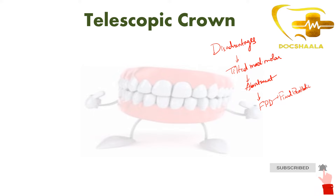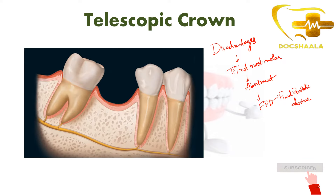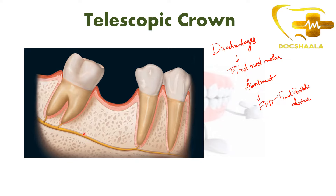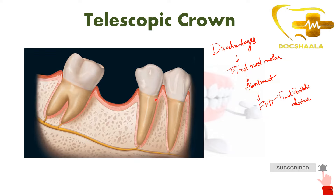So why is it a disadvantage to have a tilted mandibular molar while fabricating a fixed prosthetic denture? Here we can appreciate a tilted mandibular molar. If this mandibular molar is vertical, as in its normal position, there is a space here with a premolar over here — so the first mandibular molar is missing. When the first mandibular molar is missing, we use the second mandibular molar and the second premolar as the abutments for the fixed prosthetic denture.